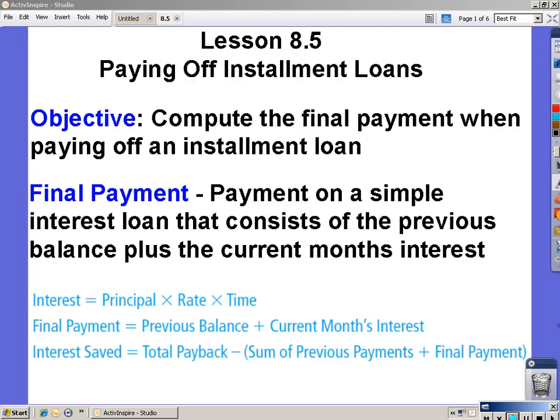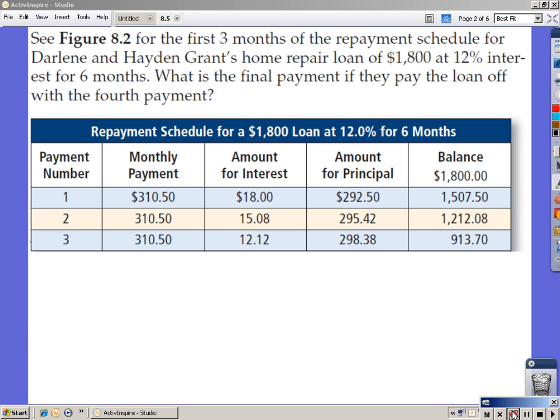And then we have our formulas. That's the same formula we've been using to find interest. Don't forget that we combine the rate times the time when we find our R value. Final payment is previous balance plus current month's interest, and interest saved is the total payback minus the sum of the previous payments plus the final payment.